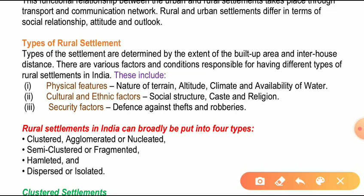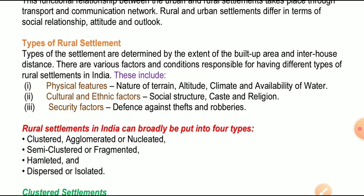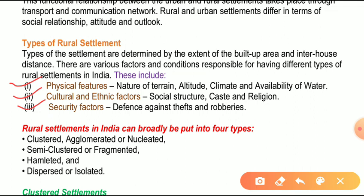Now, types of rural settlements. The types of settlement are determined by the extent of the built-up area and inter-house distance. मतलब जो settlements होती हैं, इनका जो प्रकार होता है, वो निर्धारित होता है कि दो घरों के बीच में दूरी कितनी है और घर कितने क्षेत्रफल में बनाए गए हैं। There are various factors and conditions responsible for having different types of rural settlements. इन factors में पहला physical feature है, दूसरा cultural feature, और तीसरा security feature।